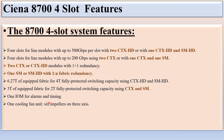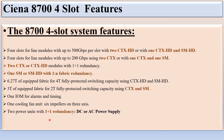There is 1 IOM for alarm and timing, 1 cooling fan unit with 6 impellers on 3 axes, and 2 power units with 1+1 redundancy — either DC or AC power supply. That covers all the main features of the CNI 8700 4-slot.